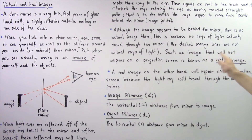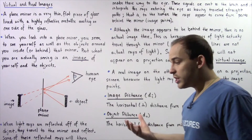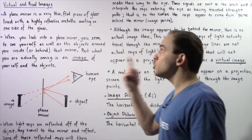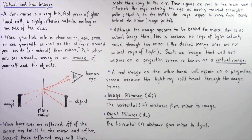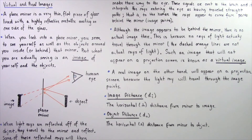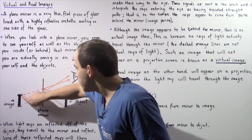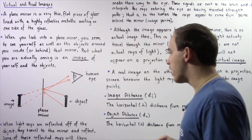Such an image that will not appear on a projection screen is known as a virtual image. This is in contrast to a real image. A real image, as we'll see in a future lecture, will appear on the projection screen because the light rays will in fact travel through the image points.